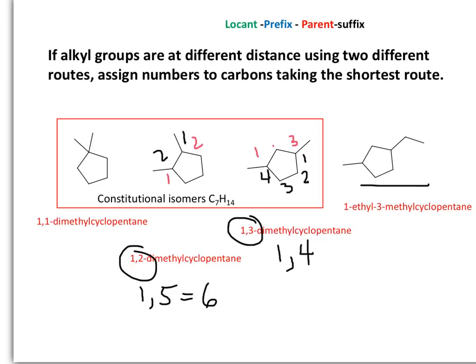In the last case, the substituents have different initials — this is an ethyl group and this one is a methyl group. When assigning the name, I must assign the smallest numbers. Since they are at the same distance, ethyl takes number one and methyl takes number three. Therefore, the name is 1-ethyl-3-methylcyclopentane.